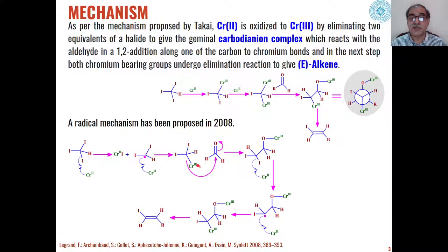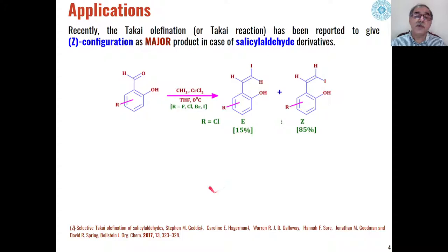Here, this intermediate directly reacts with the aldehyde to give us this type of intermediate having one chromium(III) attached to the oxygen. This further reacts with one more molecule of chromium(II) to give us this type of free radical which then reacts to give the same type of intermediate which was proposed by Takai, but the only difference is that the mechanism follows the free radical mechanism. This carbodianionic complex gives us the product with E-alkene as the major product.